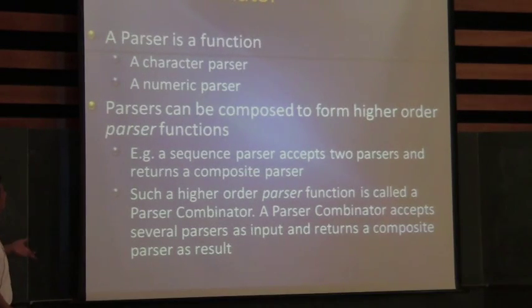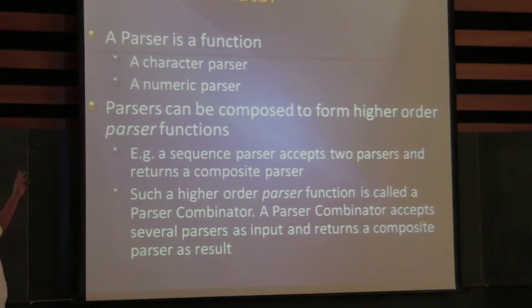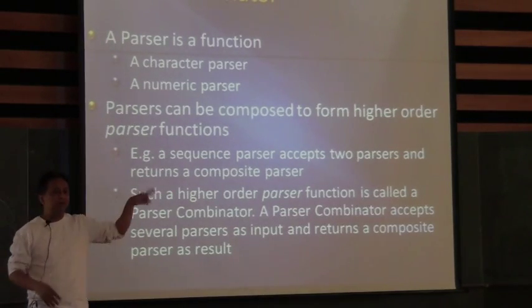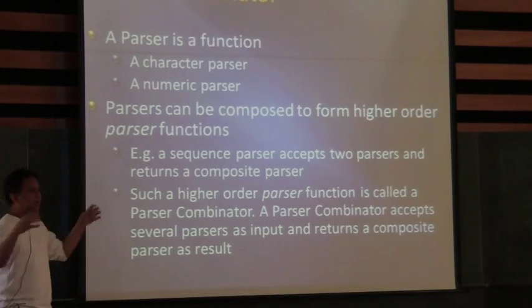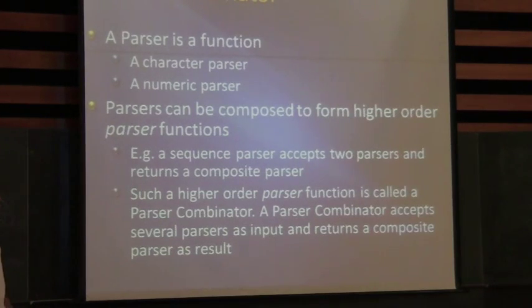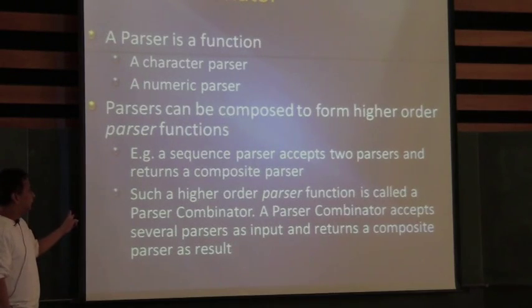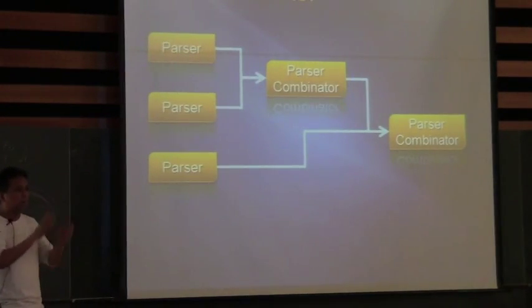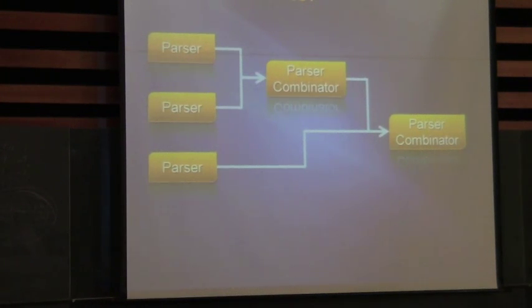What's a parser combinator? A parser is a function. An example is a character parser; another example is a numeric parser. Parsers can be composed to form higher-order parser functions. For example, you have a sequence parser accepting two parsers — the left-hand side and the right-hand side — and you form that into an aggregate, which is a sequence parser. Such a higher-order parser function is called a parser combinator in the functional programming domain. A parser combinator accepts several parsers as input and returns a composite parser as a result.